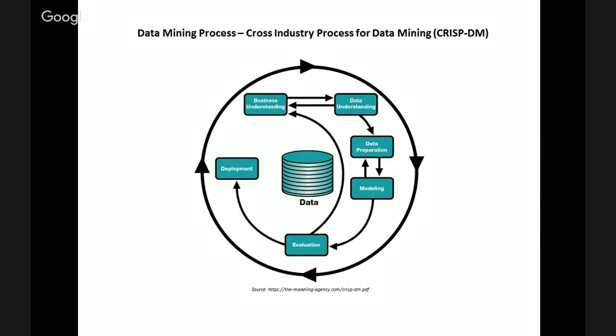The six phases of the CRISP data mining process are business understanding, data understanding, data preparation, modeling, evaluation, and deployment. I will now go into these six different stages in more detail to help you understand exactly what goes on in each stage and what the specific steps are.